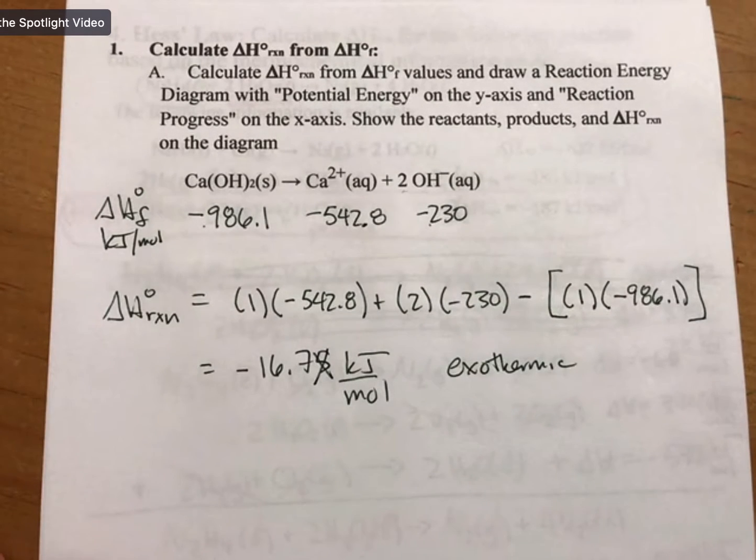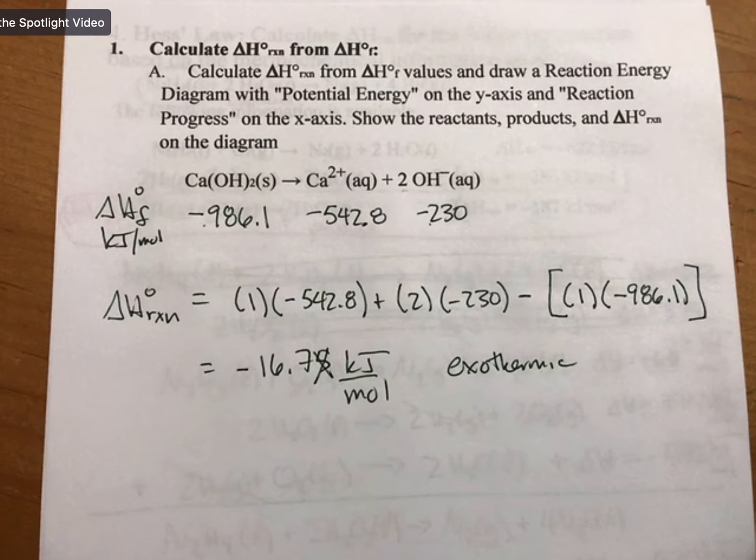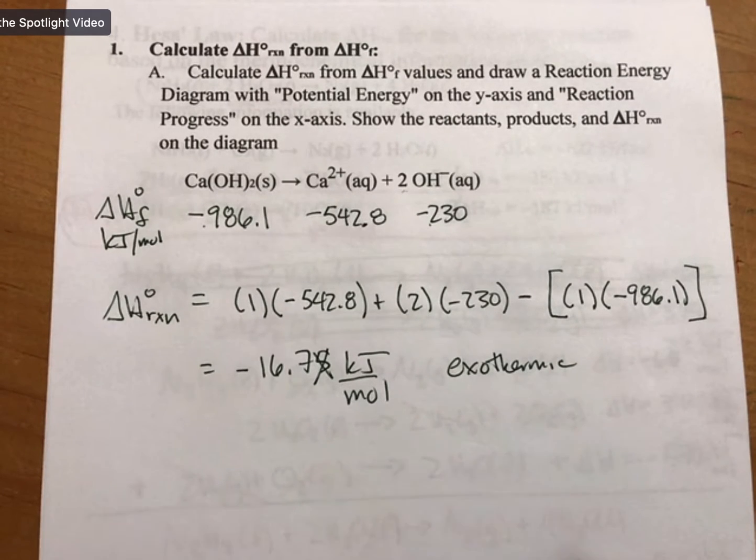I have -16.8. I have -16.7. All of these are fine because of the sig figs and rounding we discussed.